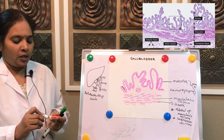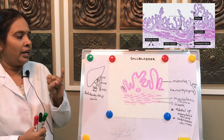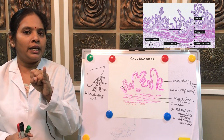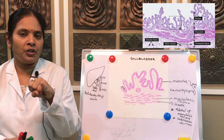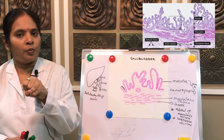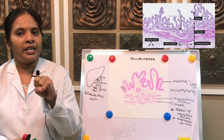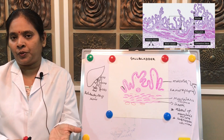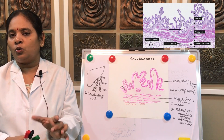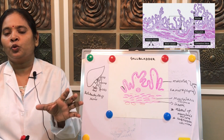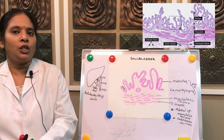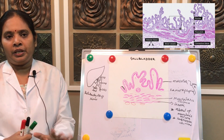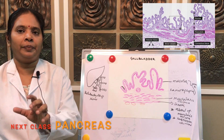To summarize the histology of the gallbladder: the mucosa shows a honeycomb appearance due to large irregular folds; it is lined by simple tall columnar epithelium with microvilli giving a striated border; the lamina propria has no lymphatic vessels; muscularis interna and submucosa are absent; the muscular layer has elastic and collagen fibers with smooth muscle in different orientations; and the serosa has tough connective tissue, large blood vessels, and nerve fibers. The next class will cover the pancreas.